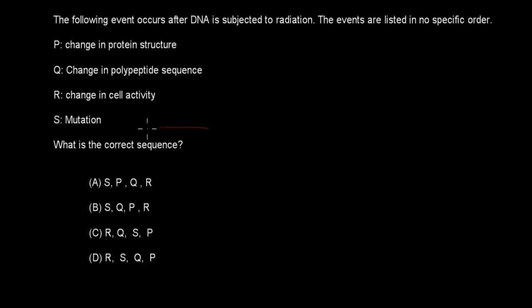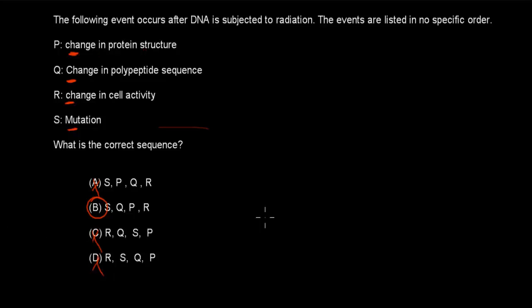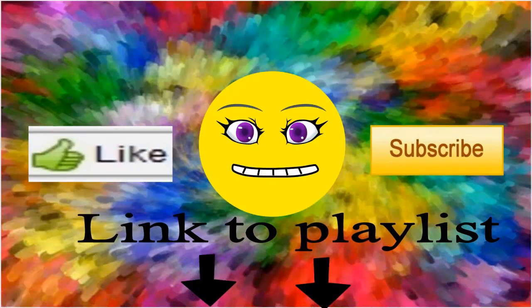Welcome back. The correct answer is B. We start with a mutation (S), which leads to a change in the polypeptide sequence (Q). A change in polypeptide sequence leads to a change in protein structure (P). And that change in protein structure leads to a change in cell activity (R). So the sequence is S → Q → P → R. I hope that was useful — thank you for watching.